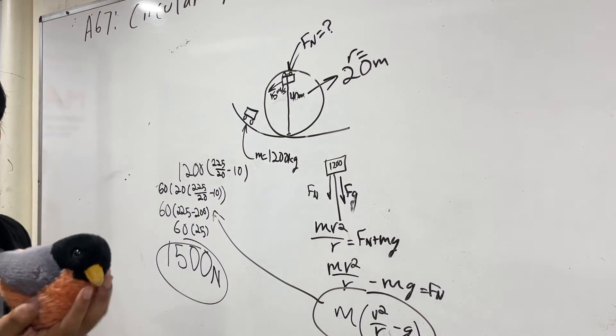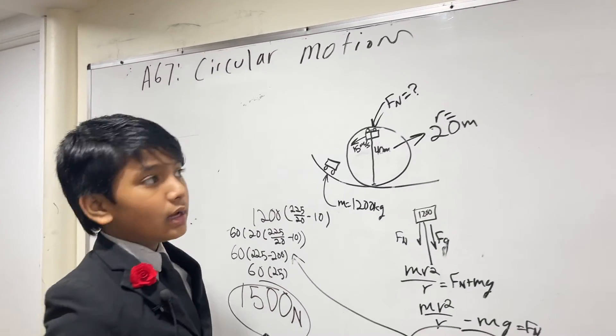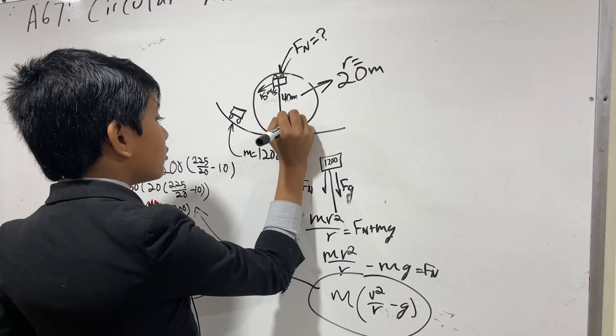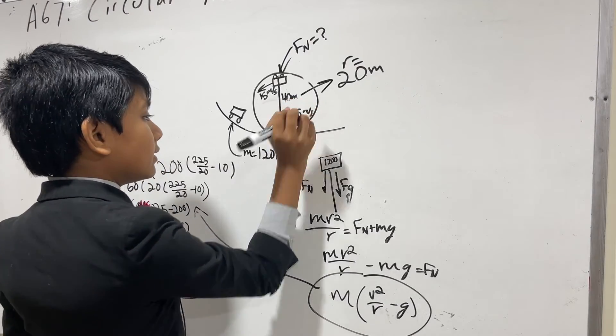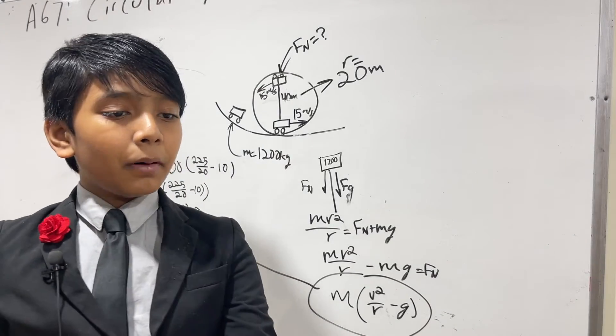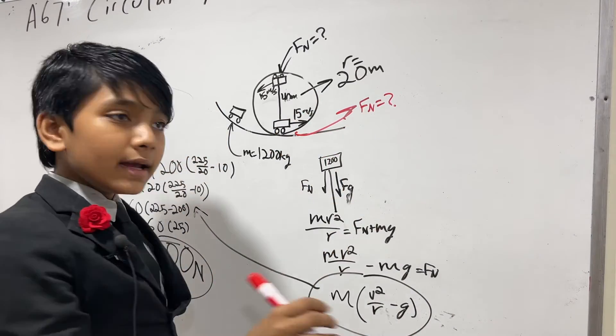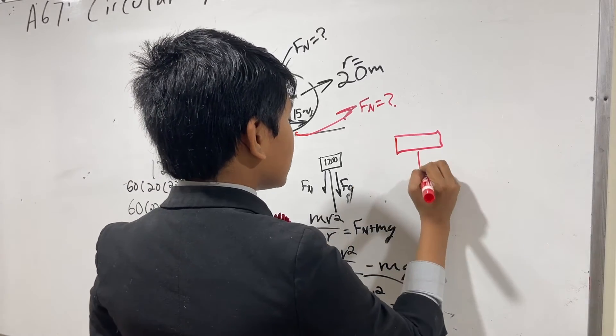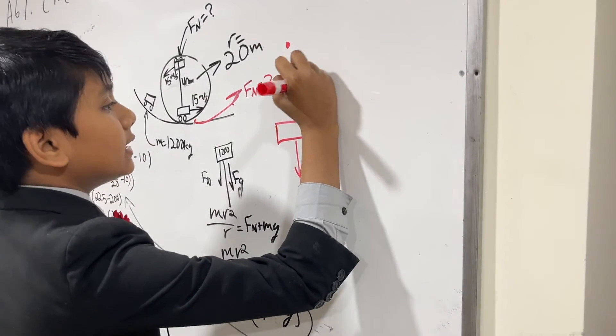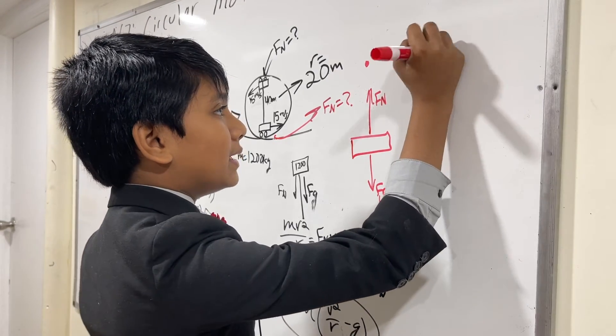But, now, before taking a birdie break, we're going to do this problem again. But, instead of the top, let's say that it returns back to the bottom, once again with a velocity of 15 meters per second. So, if it returns to the bottom now, what is the FN over here? Well, the thing is, at the bottom, FG points straight down, but that's not towards the center of the circle. So, FN is our only centripetal force here.